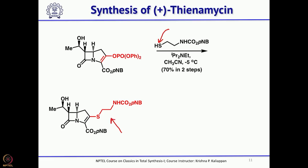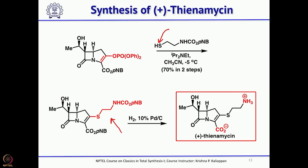To complete the total synthesis of thienamycin, the para-nitrobenzyl groups must be removed without touching the double bond. Hydrogenolysis gives the corresponding carboxylic acid; there are two para-nitrobenzyl groups — one on the acid and one as a protecting group for NH (as NHCOOPNB). Removal of the para-nitrobenzyl also causes loss of CO2, liberating NH2, which ends up in the zwitterionic form, completing the enantioselective total synthesis of thienamycin.